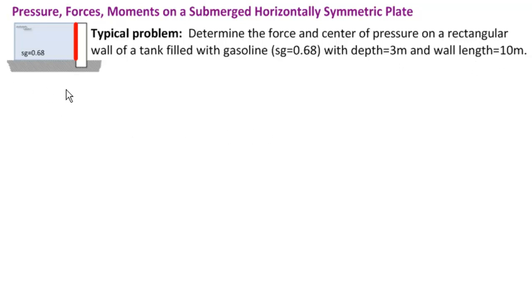So this is our picture and we have to remember that this is the wall here coming out towards us 10 meters. So we actually have a picture like this where we have a wall of 10 meters and a depth of three meters. And SG is equal to 0.68. We will point out, because later we will have inclined plates, that this wall makes a 90 degree angle with this liquid surface here.